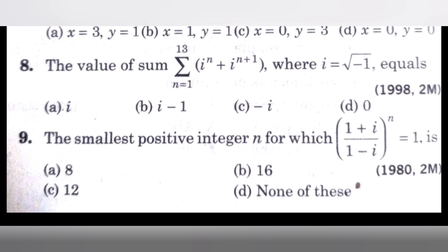Next, ninth question. The smallest positive integer N for which 1 plus i divided by 1 minus i whole power N equals 1 is. Check the options.